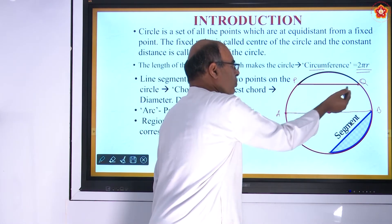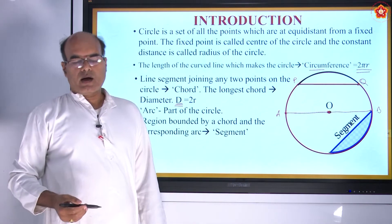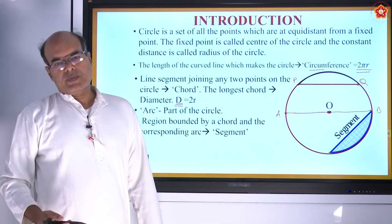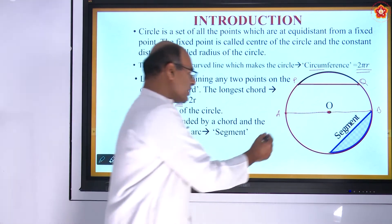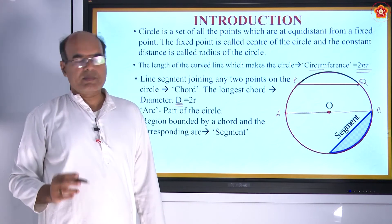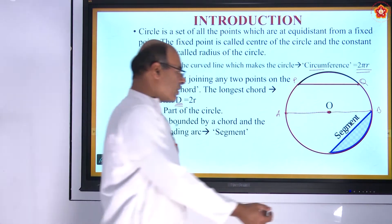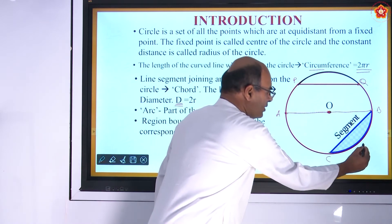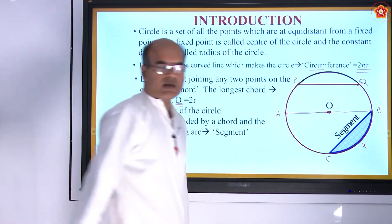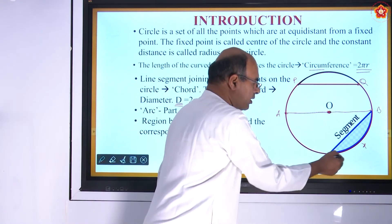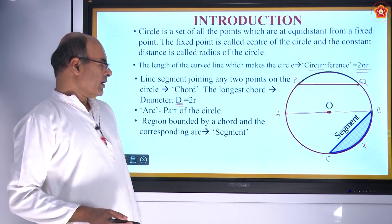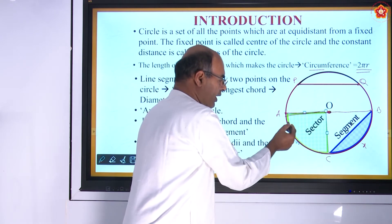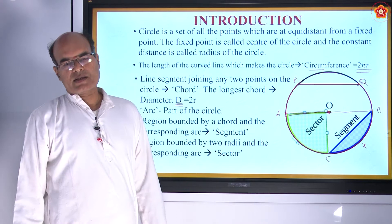If we cut a circle into two parts, each part is called an arc. The smaller part is the minor arc and the bigger part is the major arc. The diameter cuts a circle into two equal parts called semicircles. The region bounded by a chord and an arc is called a segment of the circle. The region bounded by two radii and the corresponding arc is called a sector of a circle.